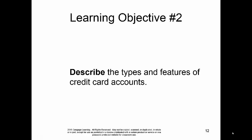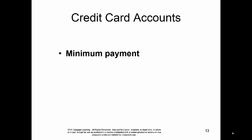Chapter 7, Learning Objective 2: Describe Types and Features of Credit Card Accounts. The first thing we need to understand is Minimum Payment — the minimum amount you need to pay each month. In the example in this chapter, paying only the minimum payment takes 10 years to pay off a credit card balance. You definitely want to pay more than the minimum. Being able to pay the minimum doesn't mean you can afford the credit card.